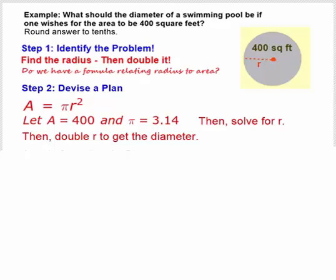We have the value of A being 400. We use 3.14 as an approximation for π, and then we have to solve for r. Once we solve for r, we just double it to get the diameter.